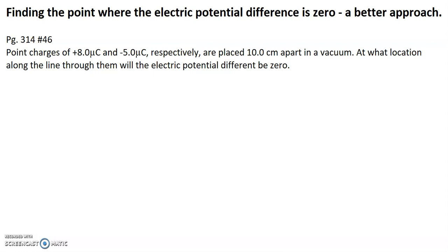Hi everyone, this is Mr. H and this video answers the question: how can we find the points where the electric potential difference is zero when given two point charges? From the textbook, page 314 number 46, the question states: point charges of plus 8 micro coulombs and negative 5 micro coulombs are placed 10 centimeters apart in a vacuum. At what location along the line through them will the electric potential difference be zero?